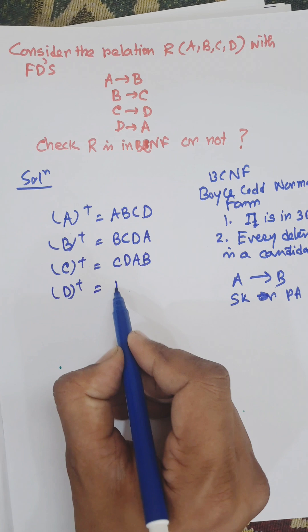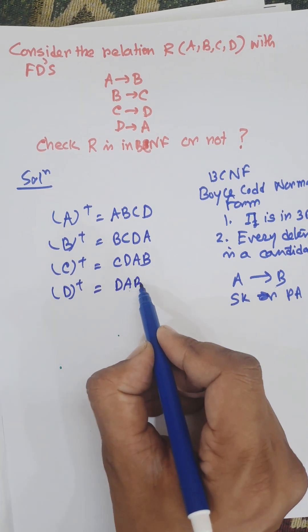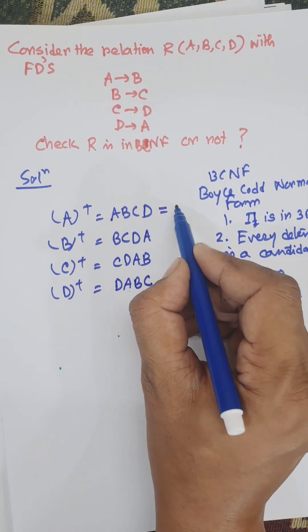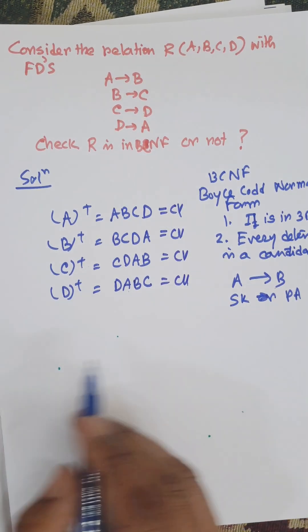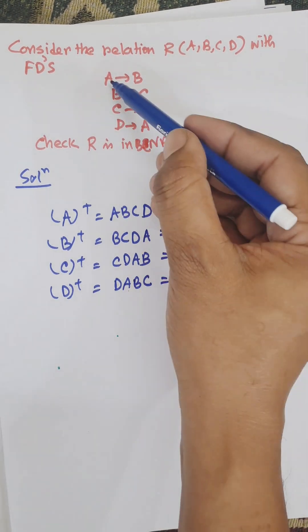So all are candidate keys. A, B, C, and D - every determinant is a candidate key.